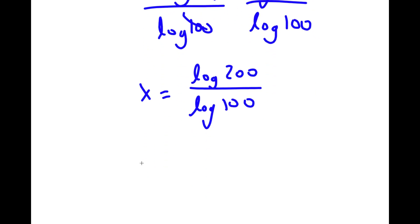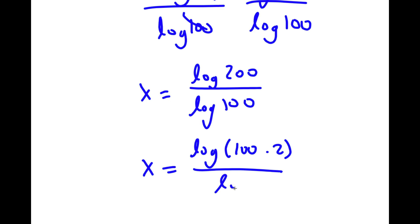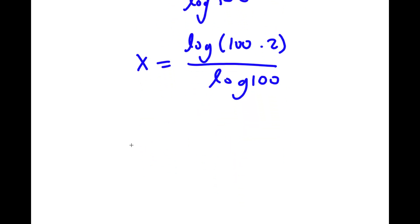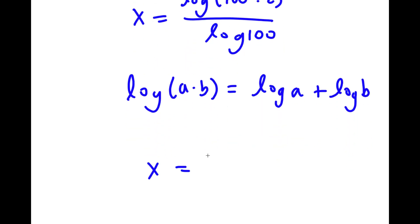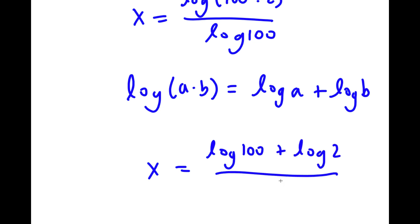Now 200 is the same thing as 100 times 2. I have this over log 100. And if I have something in the form log a times b, this is equal to log a plus log b. So log of 100 times 2 equals log 100 plus log 2, and I have this over log 100.